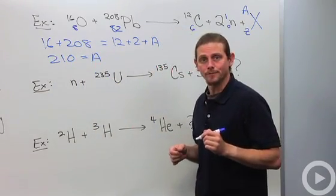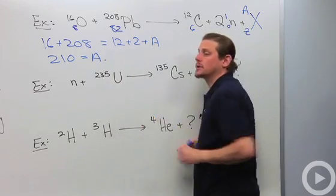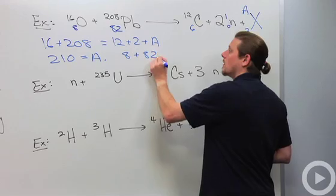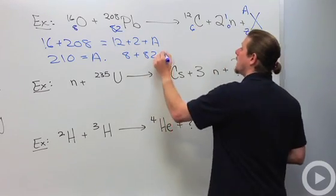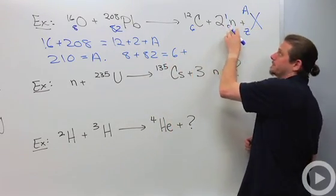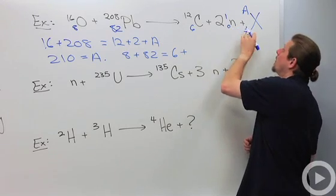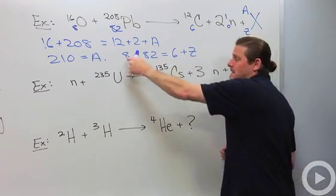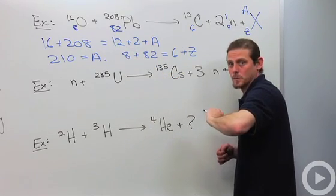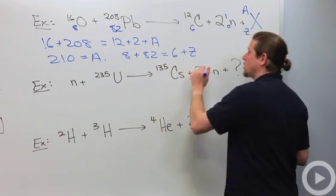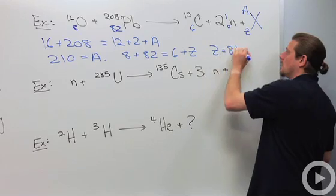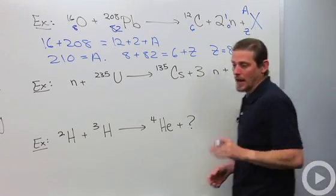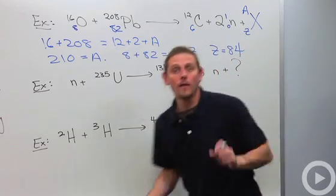Let's do the charge. We'll have 8 plus 82 equals 6 plus 2 times 0 is 0 plus Z. I'll subtract the 6 from the 8 and that gives me 2. 2 plus 82 is 84. That means that our X guy here is nothing more than 210 and 84.